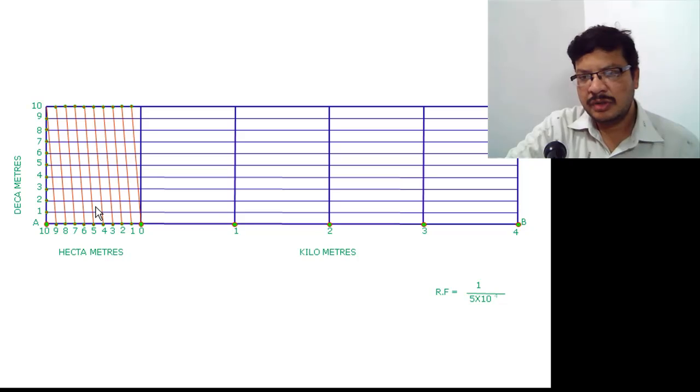Now to represent the given value that is 3 kilometers and 5 hectometers and 6 decameters. So 3 kilometers take somewhere here initially. Then 5 hectometers will be somewhere here. From 5 hectometers along this inclined line take 6 decameters. This is 1, 2, 3, 4, 5 and 6. Now draw the line joining these two points.